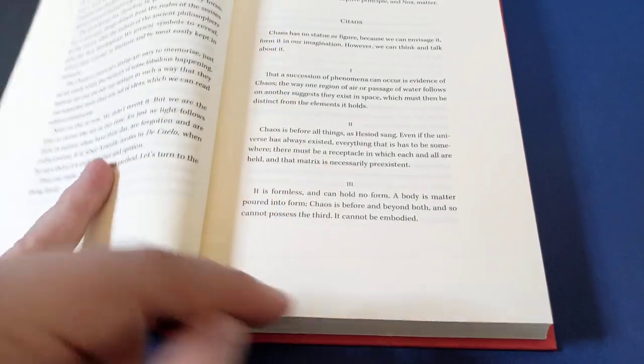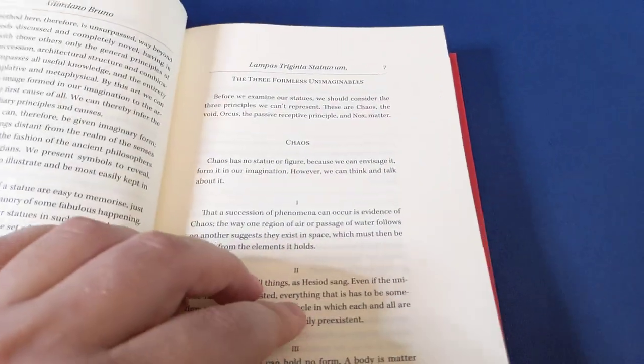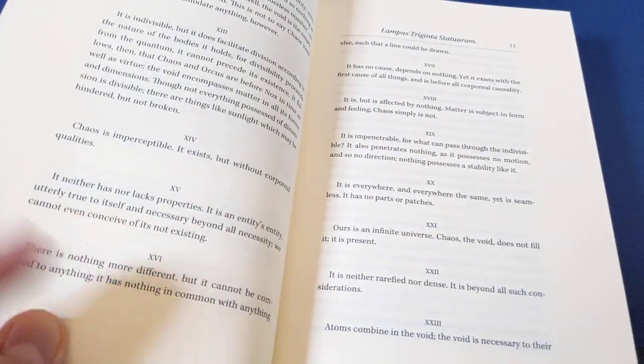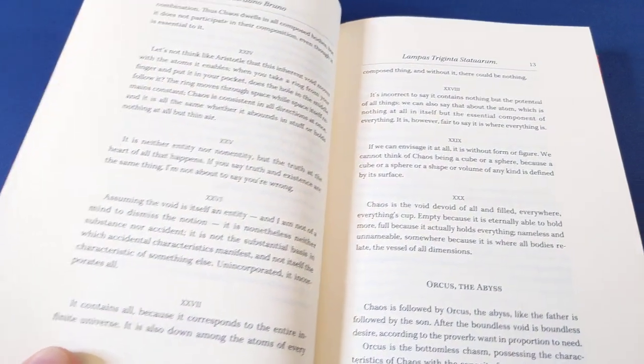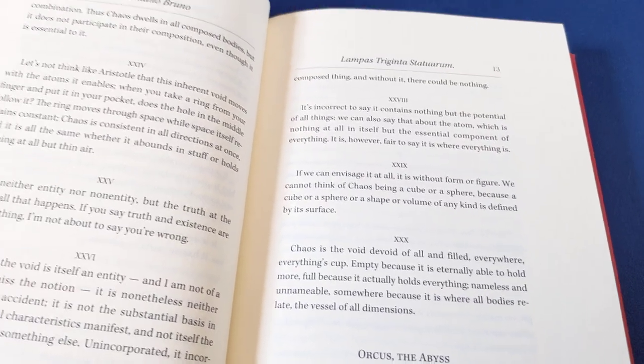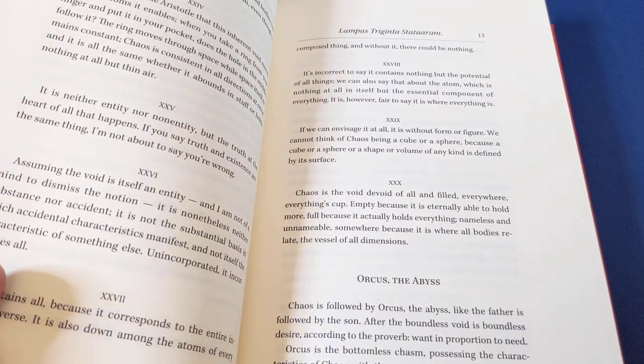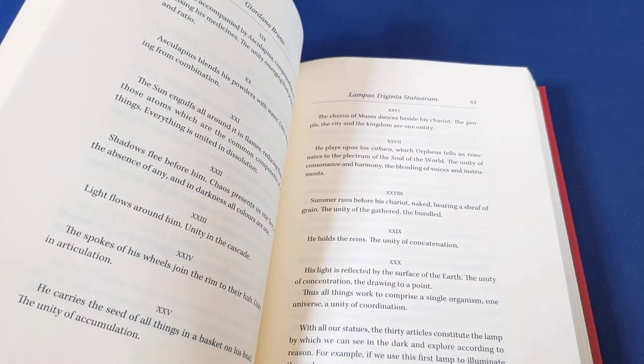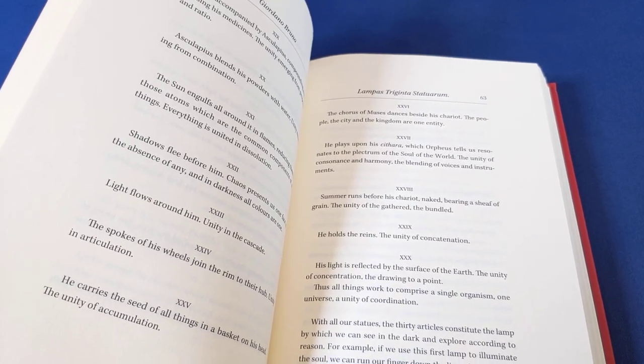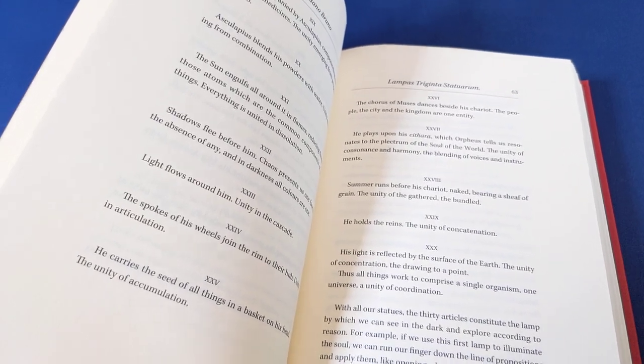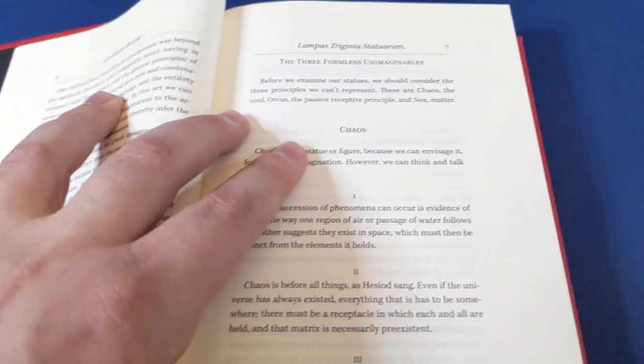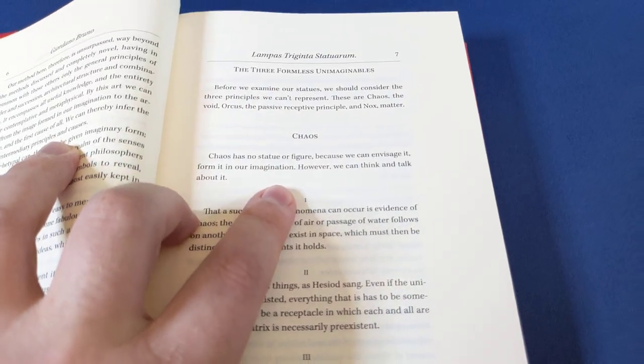It makes for fascinating reading just from the perspective of learning about these deities. He starts off with chaos. I would have liked to have seen a bit more granularity in the table of contents, like chaos on page seven, then Prometheus on the following page. But you get to see the 30 parts, 30 subdivisions for each concept. The second one's Orcas, being the abyss, the infinite lack and therefore desire. Very interesting concepts, one after the other.